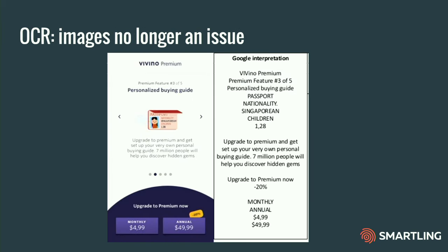One last thing to mention: sometimes when a translator needs context there's no HTML context available, but there may be a screenshot or a design from a designer that exists as an image. We've added a new capability where if you load an image into Smartling, we'll automatically do OCR on the image and extract all of the content to be translated. That's just another example of the kinds of things we provide for translators in the platform.